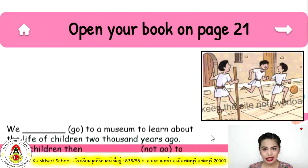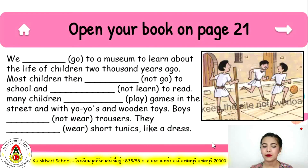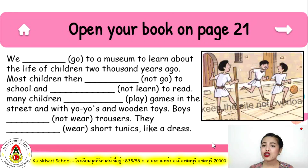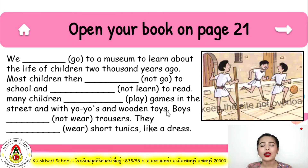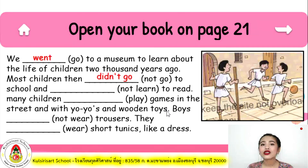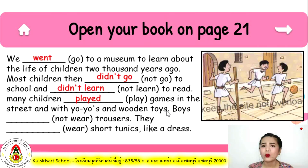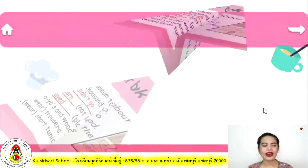Open your books on page 25. 'We ___ go to a museum to learn about life of children 2,000 years ago. Most children then not go to school and not learn to read. Many children play games in the street with yo-yos and wooden toys. Boys not wear trousers. They wear short tunics like a dress.' Answers: went, didn't go, didn't learn, played, didn't wear, wore.